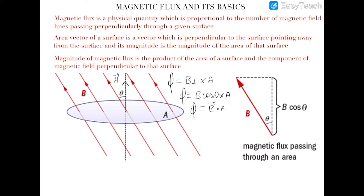In scalar form, flux equals B_perpendicular times A. In vector form, flux is B dot A, since A·B = AB cosθ. This is the net magnetic field dotted with the area vector — exactly analogous to electric flux in electrostatics, where electric flux equals E dot A.